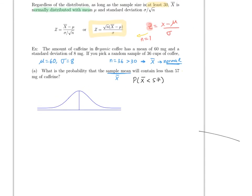We do the same thing as in section 6.2, except we use the CLT formula. So z = (√36)(57 − 60) / 8, which equals −2.25. You should check this calculation. Once you find the value for z, this is identical to section 6.1.